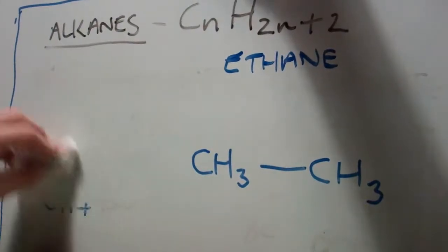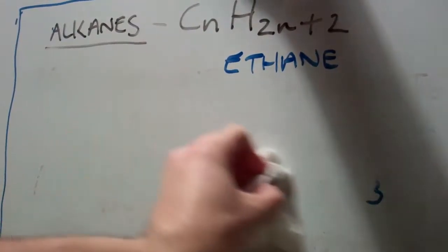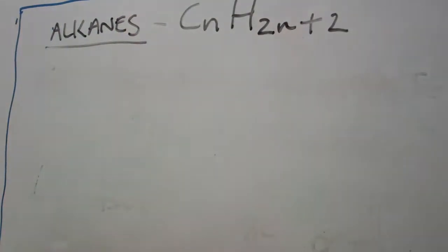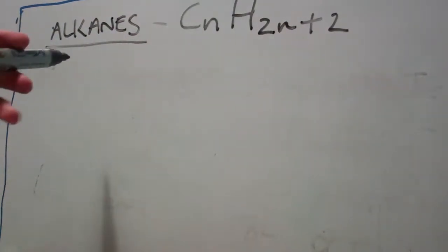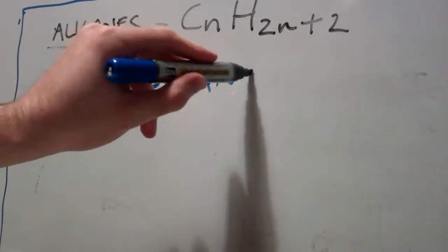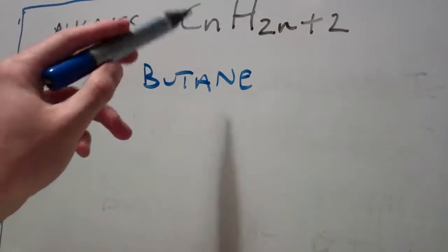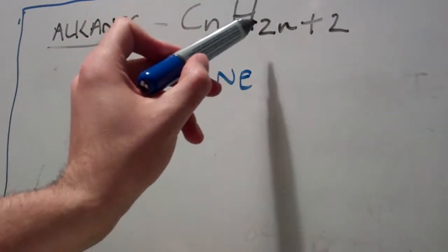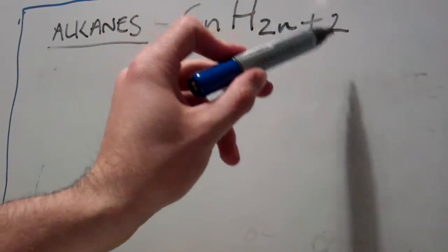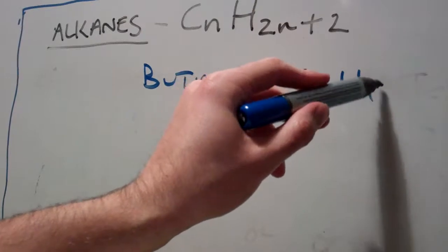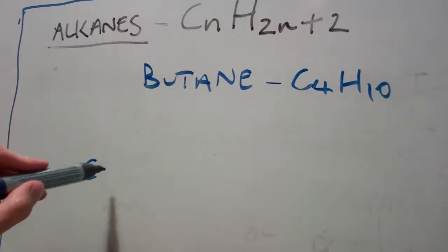Now, if we want to go a bit further, let's choose something like pentane or butane. Let's go butane. Butane has got four carbons. So C4H2 times 4 is 8 plus 2 is 10. So we're looking at C4H10. We need four carbons.